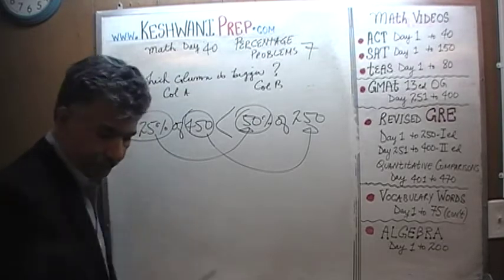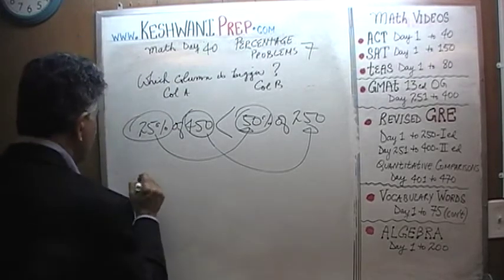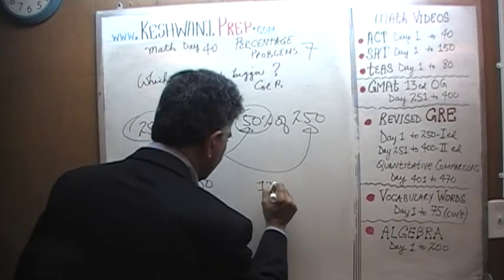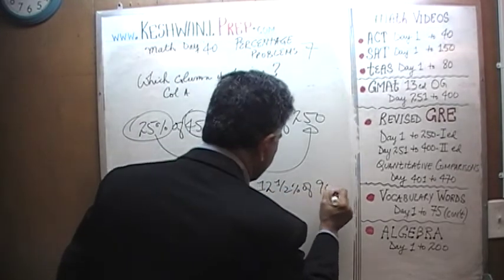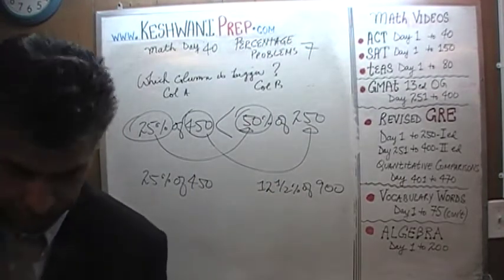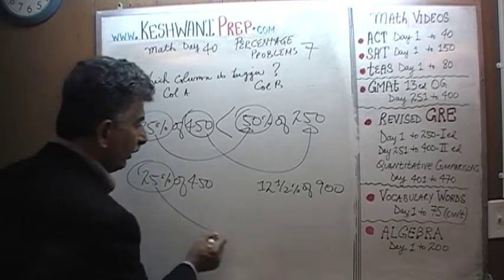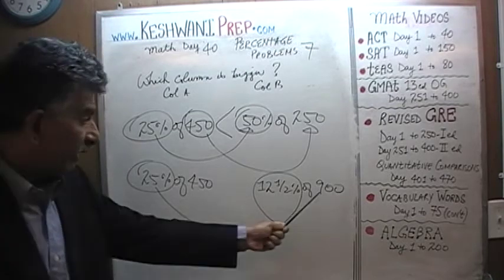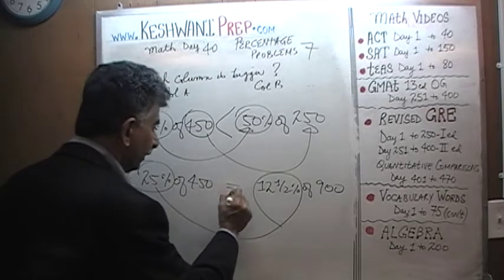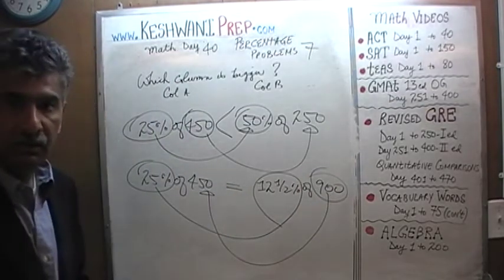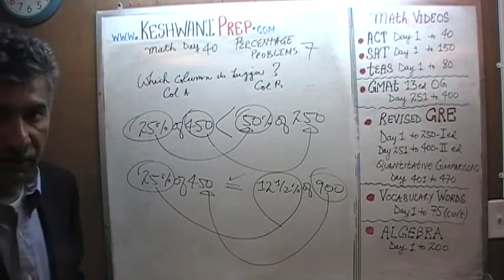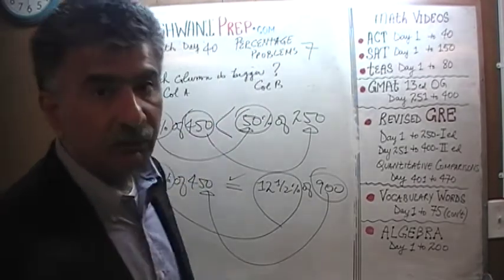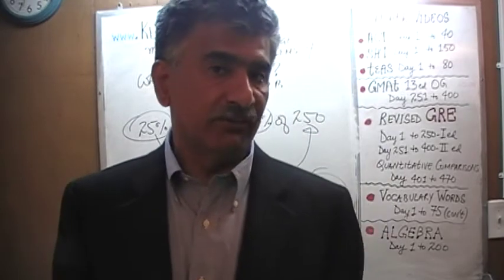How about 25% of 450 as opposed to 12.5% of 900? Instead of 25% we have 12.5%, which is half of 25%. Since the percentage is half as much, if the amount happens to be twice as much, then these two will be equal. Is 900 two times 450? The answer is yes. These two quantities are equal to each other: 25% of 450 is the same as 12.5% of two times 450, which is 900.